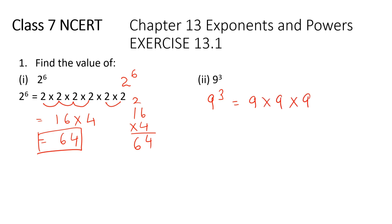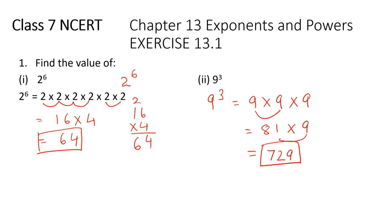9 nines are 81. Then 81 times 9: 9 ones are 9, and 9 eights are 72, so the answer is 729.